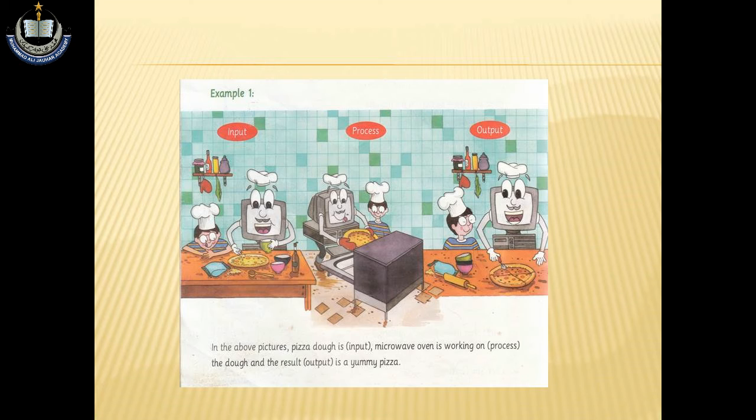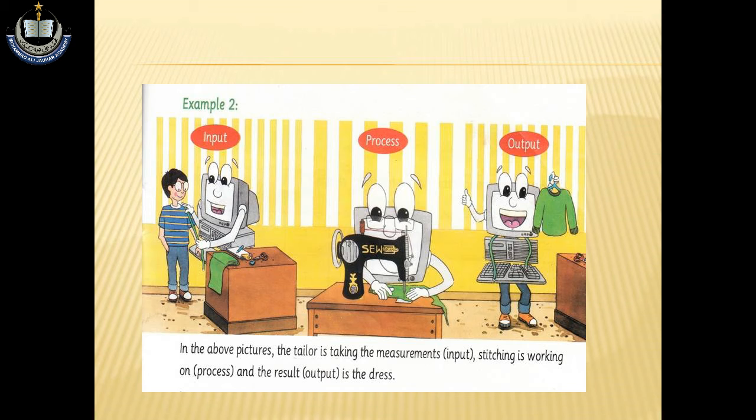Example number two: In the above pictures, the tailor is taking the measurement input, stitching is working on process, and the result output is the dress. جب آپ tailor کے پاس اپنا سوٹ سلوانے جاتے ہیں تو سب سے پہلے tailor آپ کا ناپ لیتا ہے اور وہ measurement آپ سے لے رہا ہے وہ input ہے۔